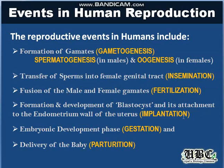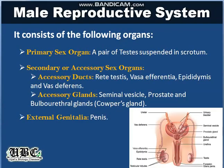With implantation, the beginning of pregnancy happens. The zygote will ultimately develop into an embryo and later into the fetus. This process is known as gestation, which is the embryonic development phase. Finally, when the fetus is fully developed and ready to come out, the delivery of the new baby is known as parturition.